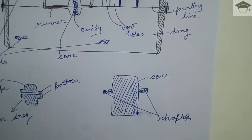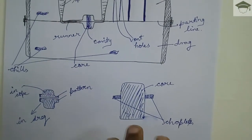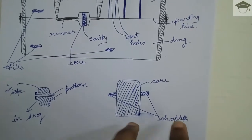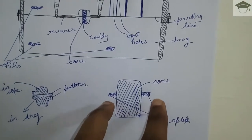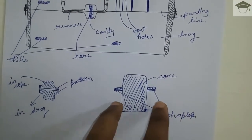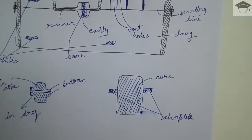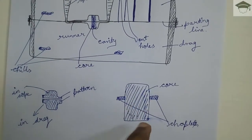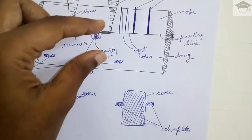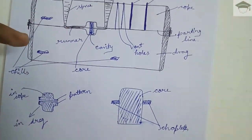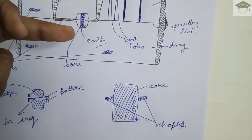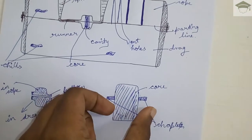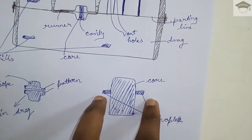Now there is one more term - chaplets. Chaplets are the supporting structure to the core. Chaplets are metallic pieces or wooden pieces or ceramic pieces that are used in order to support the core because the core itself cannot withstand the pressure of the flowing molten metal. So in order to support them these chaplets are used. Minimum two are used and more than two can be also used.